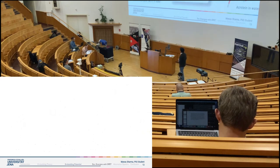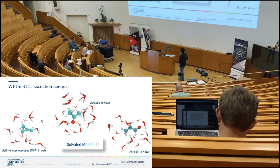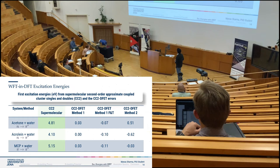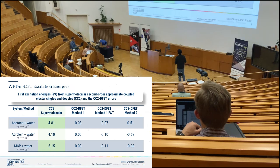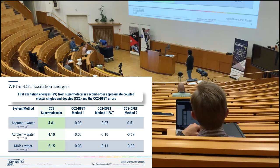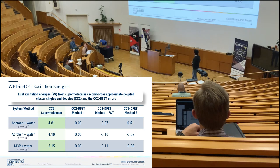Looking at some results: here are excitation energies for solvated molecules like acetone in water, methyl-cyclopentadienyl-propane in water, or acrolein in water, obtained using the coupled-cluster second-order approximate method CC2. The green column shows reference excitation energies; the other columns show errors for different methods. Method 1 performs really well, giving incredibly low errors — a maximum of 0.03 eV. A modification to Method 1 was supposed to perform better but performs slightly worse, probably due to error cancellation. Method 2 performs the worst, but even these methods are not bad compared to plain DFT results.